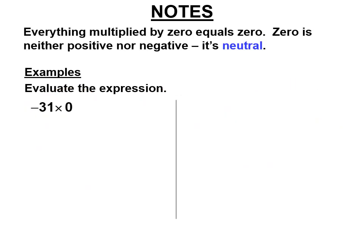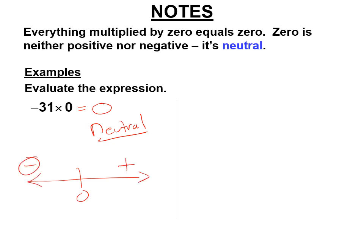There is an exception. We hardly ever say the word exception in math, but it's almost always something with zero, and that's the case here. Negative 31 times zero has a negative in it, but the answer is not negative — it's zero. Zero times everything is zero, so that makes the answer neutral. There's a positive side of the number line and a negative side, and right in the middle is zero, which is neutral. This violates the rule — one negative, it doesn't matter, it's still zero. Two negatives: still zero, still neutral, because it's multiplying by zero. You're never going to write a negative sign or a positive sign on zero, because it's always neutral.